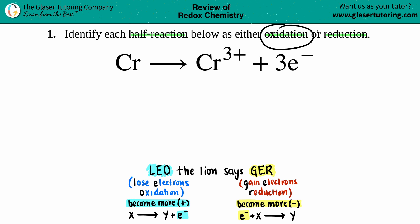Whenever you're talking about oxidation-reduction, or redox (R-E-D-O-X, which is the combination of oxidation and reduction), always think of the mnemonic: LEO the lion says GER. So we have LEO and GER.